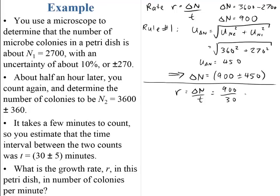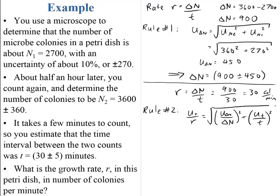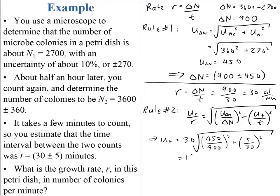Then we divide by t: 900 divided by 30 is 30 colonies per minute. Using rule 2 (the division rule), the fractional uncertainty in r equals the square root of (450/900) squared plus (5/30) squared, multiplied by r (which is 30), giving 16. So the rate is 30 plus or minus 16 colonies per minute.